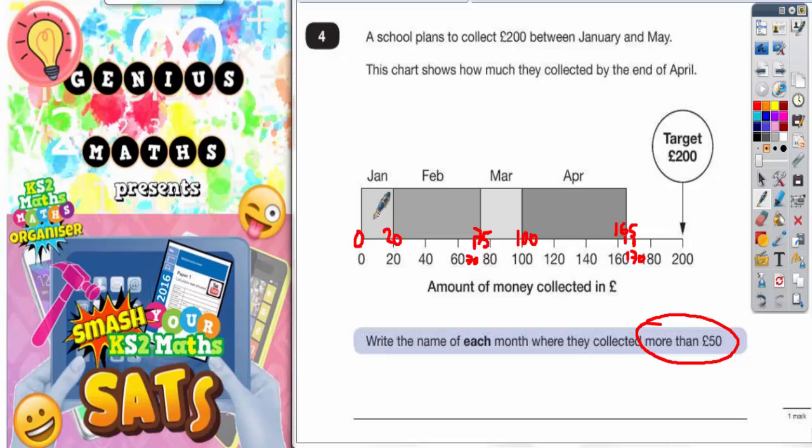So from 0 to 20 that's just going to be £20. From 20 up to 75 that's another £55. So 20 plus 55 takes you to 75. 75 up to 100 is £25. And 100 up to 165 is £65. So these amounts in blue here are the actual amounts that they made in each month.